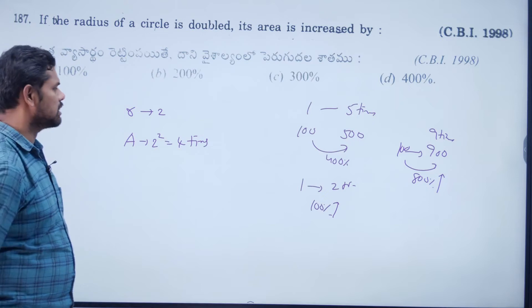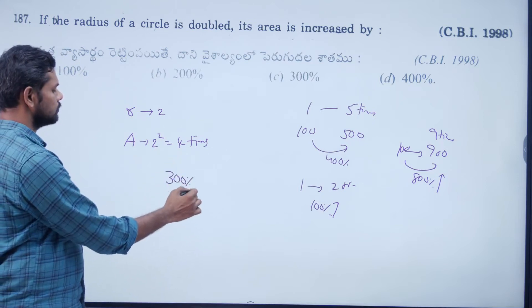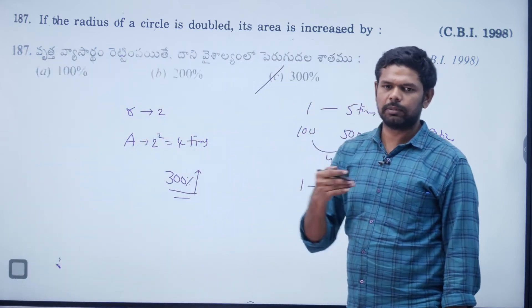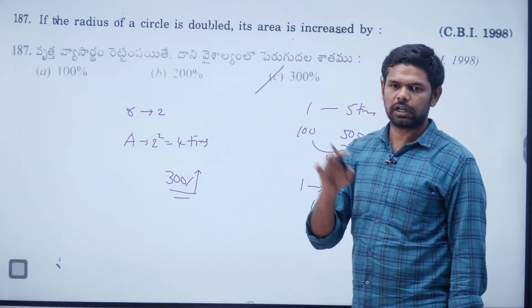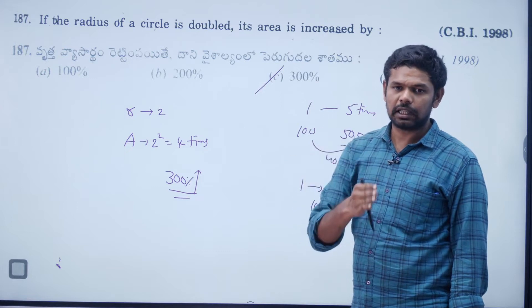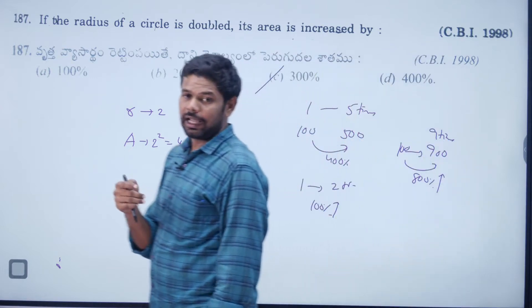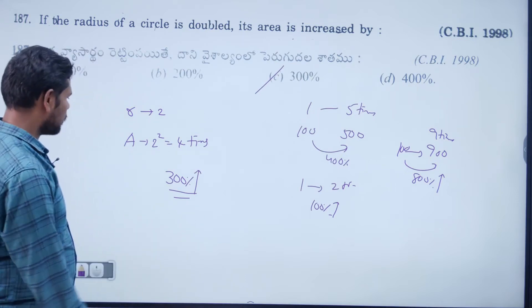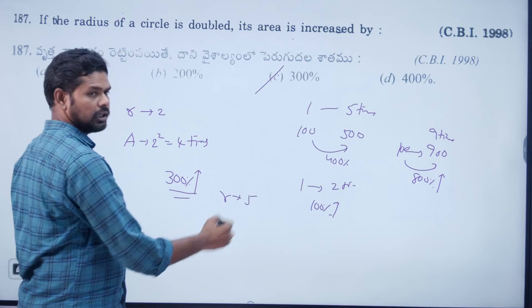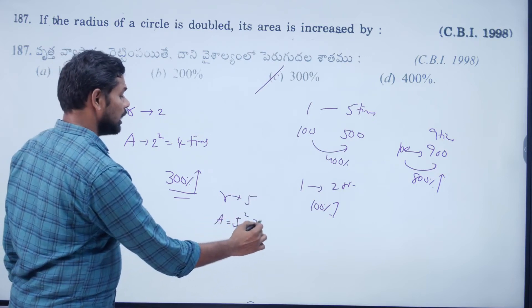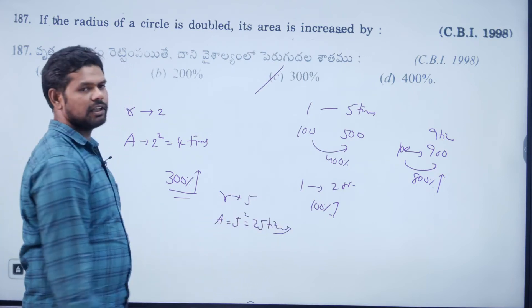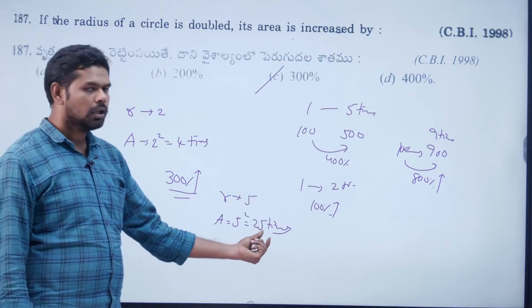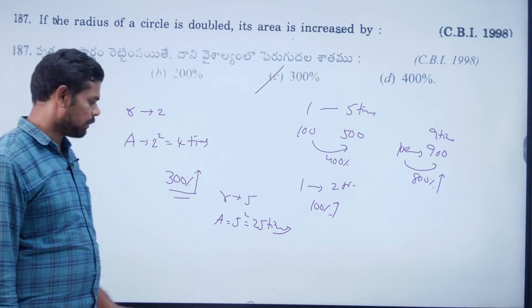If radius becomes 4 times, area increase is 300%. If radius becomes 5 times, change is 400%. If radius doubles, change is 100%. If radius becomes 9 times, change is 800%. If radius becomes 15 times, change is 1400%. If r becomes 5 times, area becomes 25 times — percentage increase is 2400%.